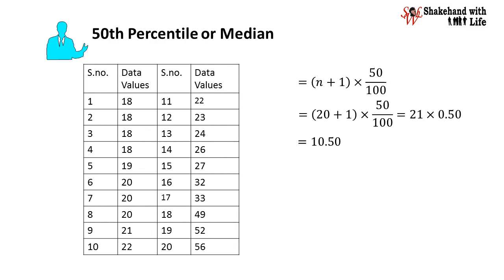So in the data set arranged in ascending order, we find that the 10th observation is 22 and the 11th observation is also 22. Therefore, the observation that would lie in position 10.5, halfway between the 10th and 11th observations, is the median of the data.